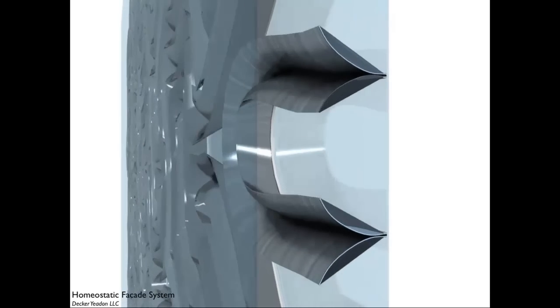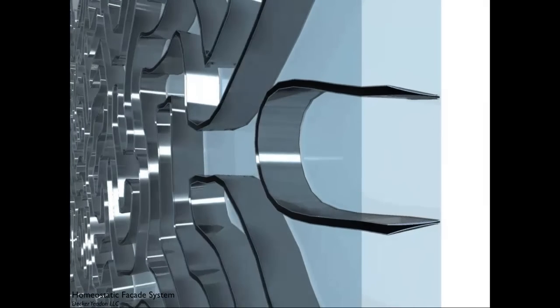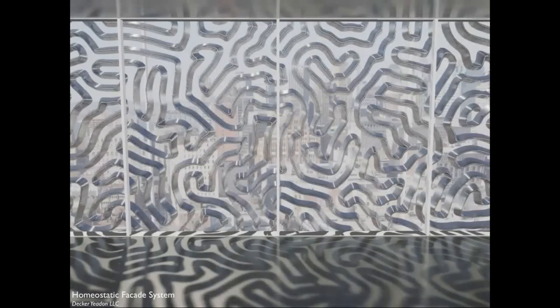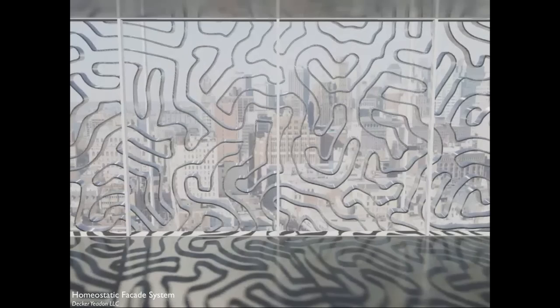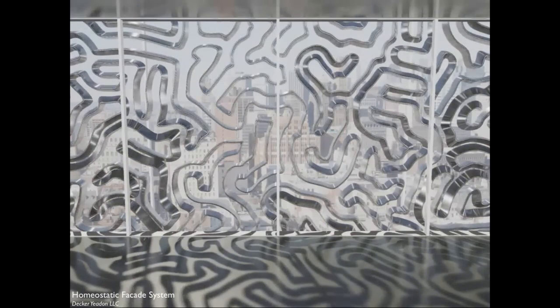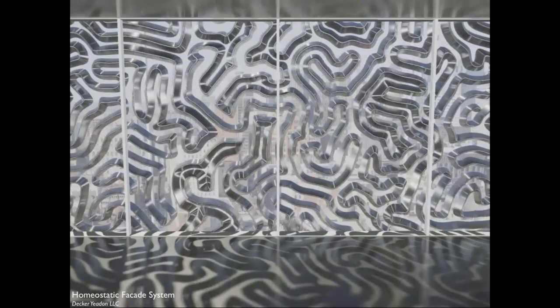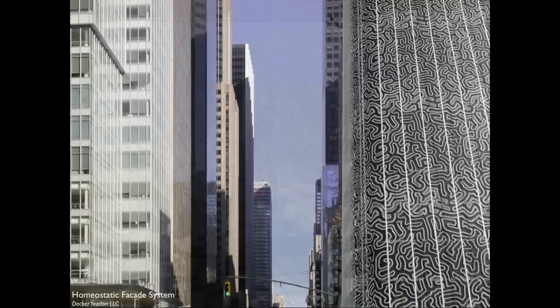Since the material is the motor and the shading device at the same time, this is an extremely lightweight shading system that can simply be adhered to the inside of a double-skin wall system. Since the material is the motor and the shading device itself, you can activate it at any given point of the ribbon, and you have a very high degree of control over the system, not only to block solar heat gain, but you can also direct and diffuse light.